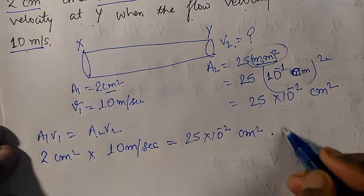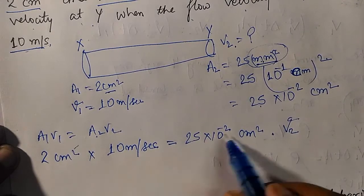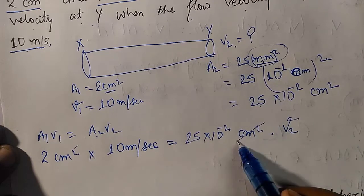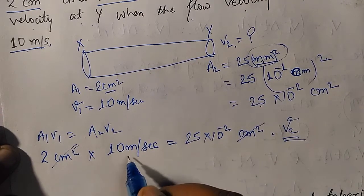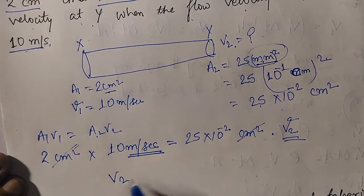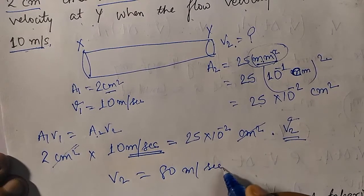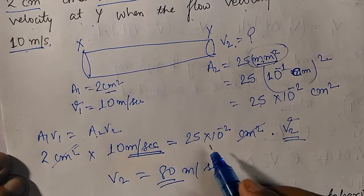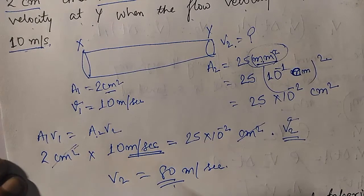The centimeter square units cancel. So V2 comes out in meters per second. Therefore V2 = 80 meters per second. You can verify this calculation.